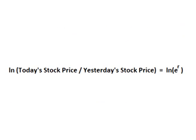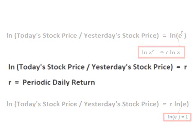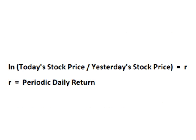If we take the natural log of both sides, we get the natural log of today's price divided by yesterday's price equals the natural log of E raised to R. The natural log of E raised to R is just R, so we get the natural log of today's price divided by yesterday's price equals R.